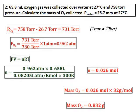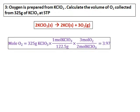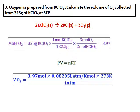Oxygen is prepared from potassium chlorate. Calculate the volume of oxygen collected from 325 grams of potassium chlorate at STP. The formula is: KClO₃ → KCl + O₂. Balance the equation. First, convert grams of potassium chlorate to moles of oxygen using the equation. Once I have moles of oxygen, use PV = nRT: moles are known, R is known, temperature at STP is 273 K, pressure is 1 atmosphere, so calculate the volume of oxygen.